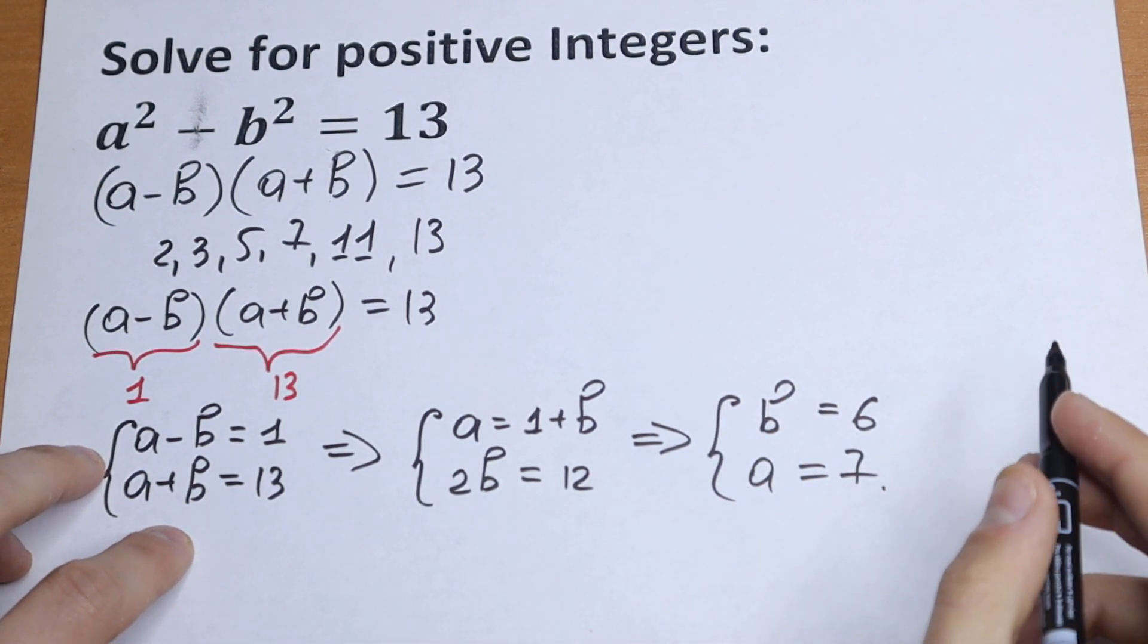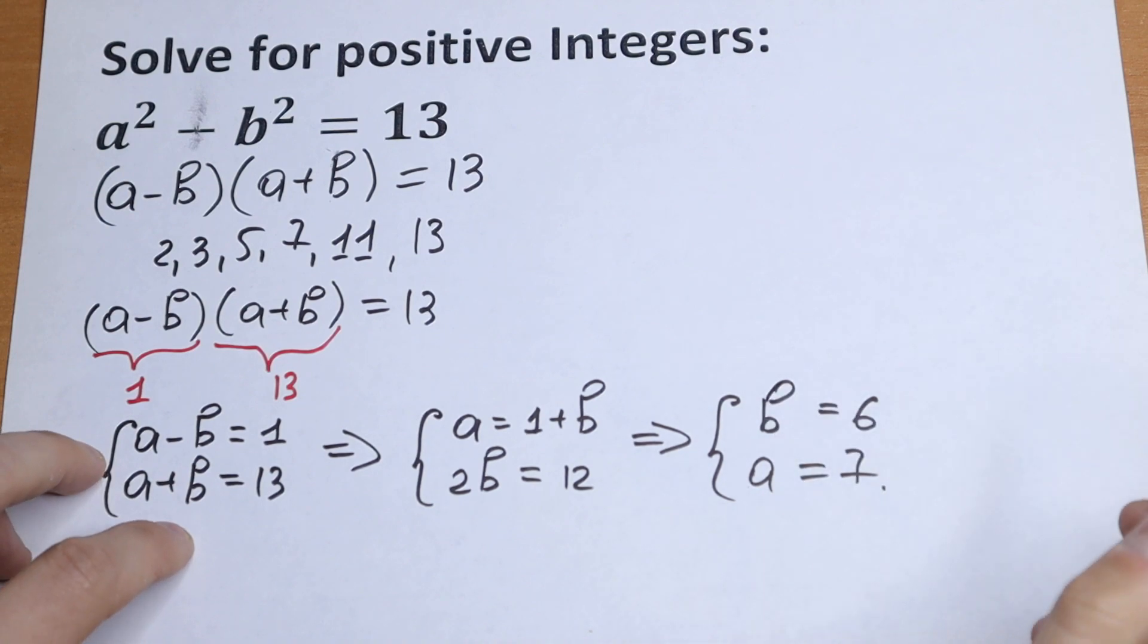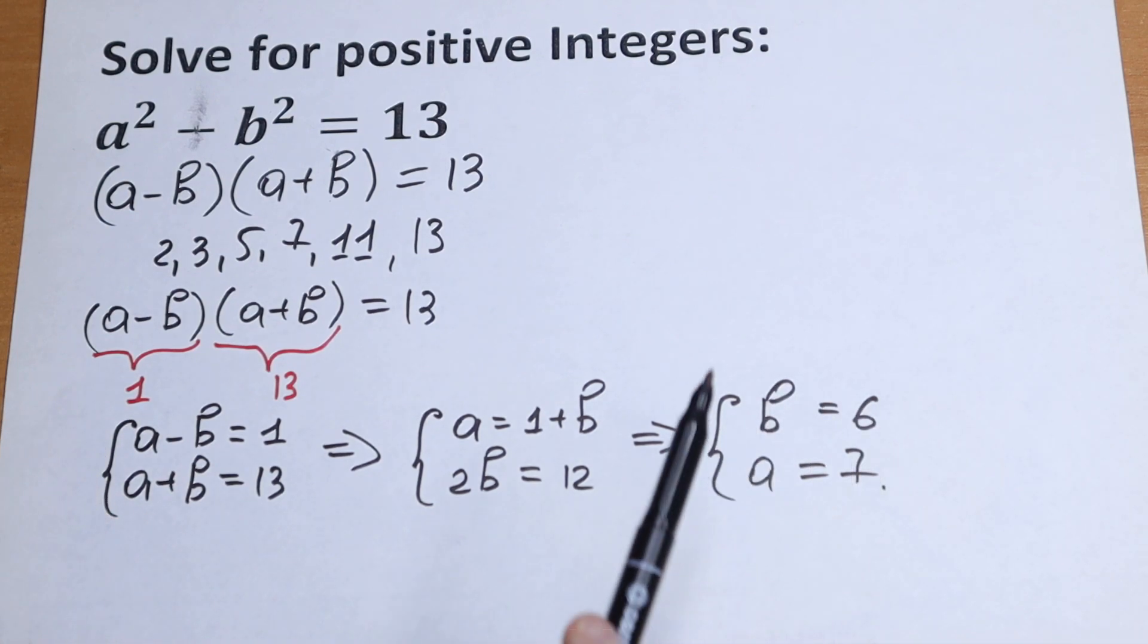And this is our answer. So a equals 7 and b equals 6.